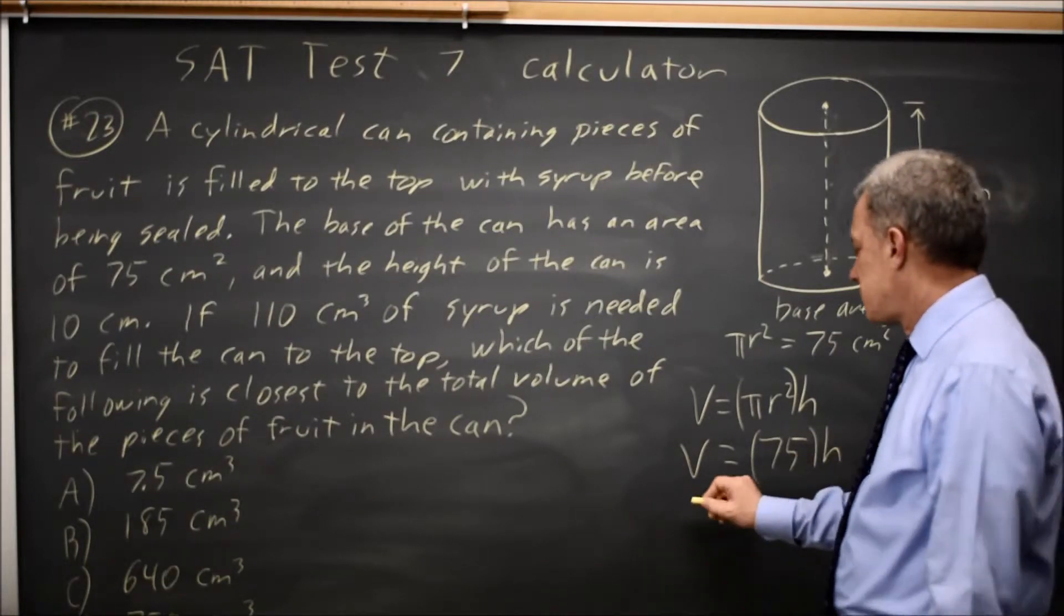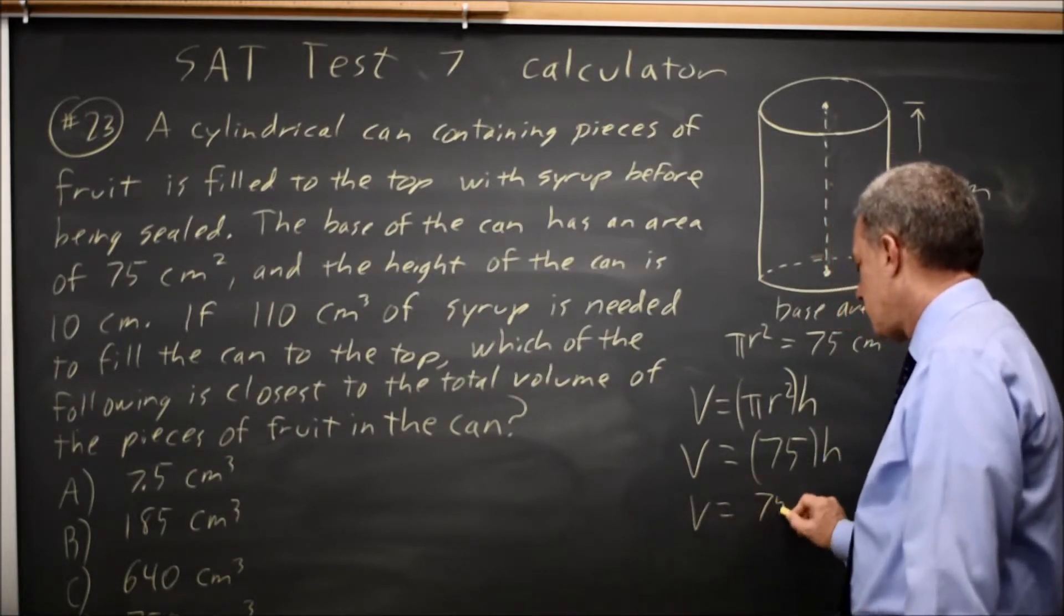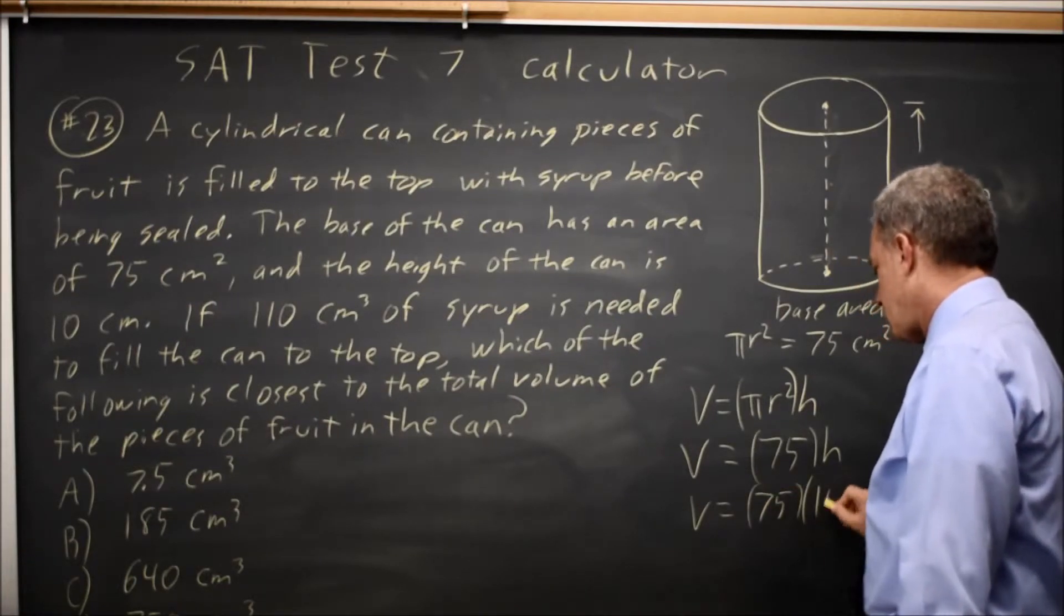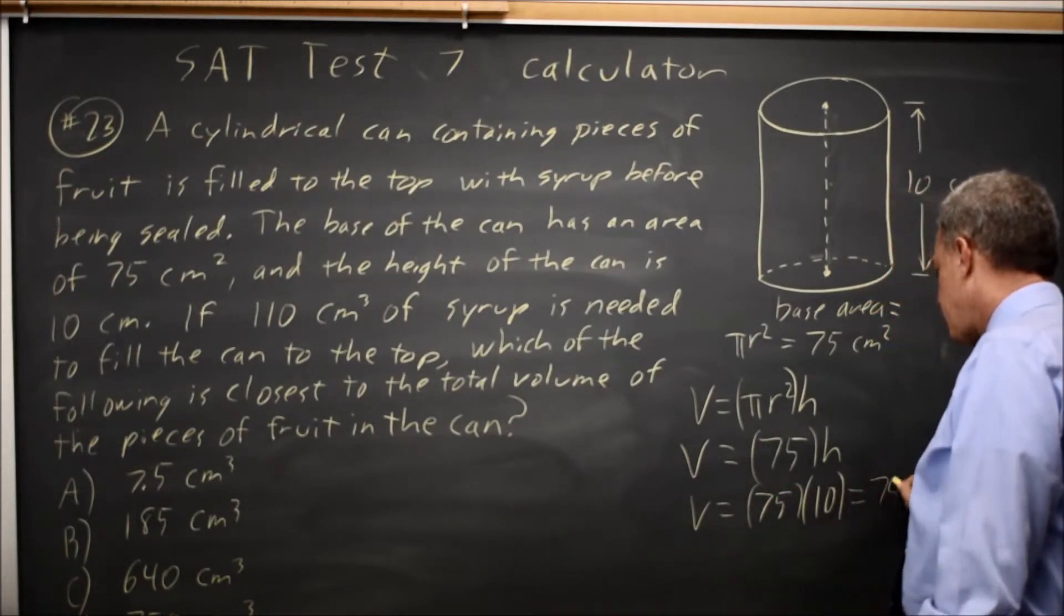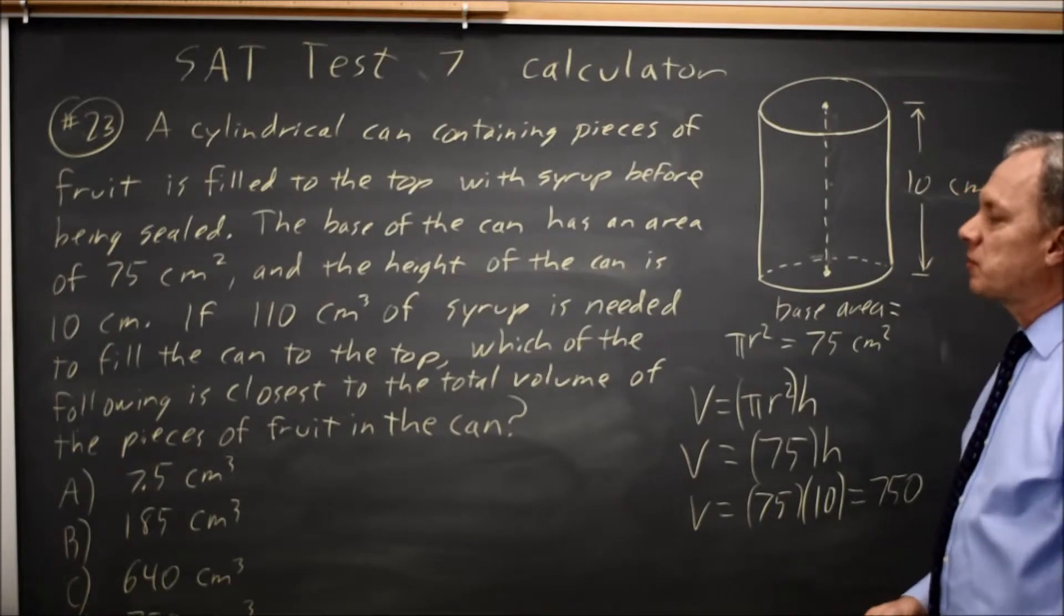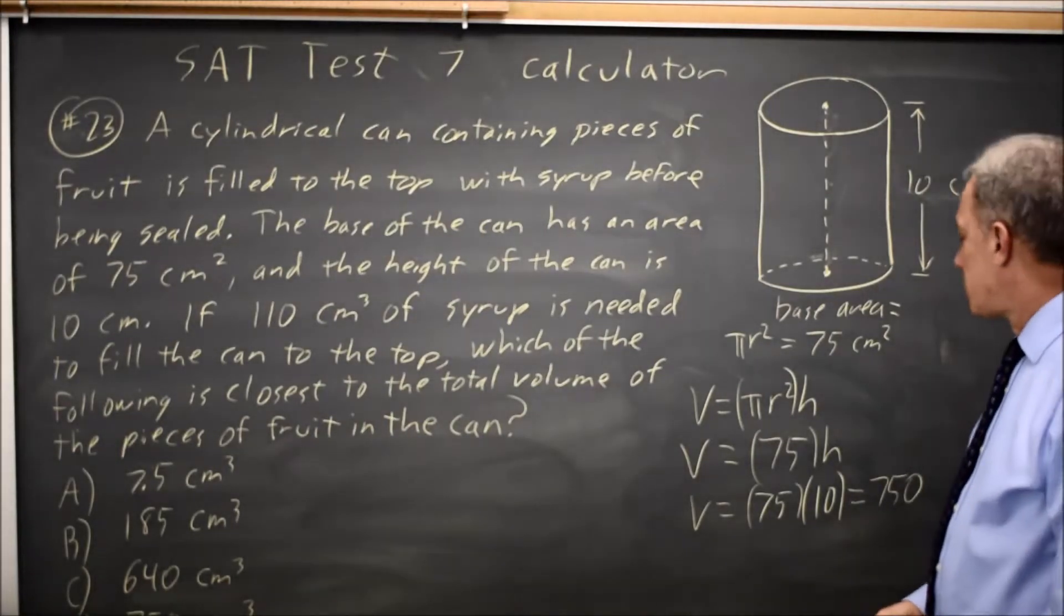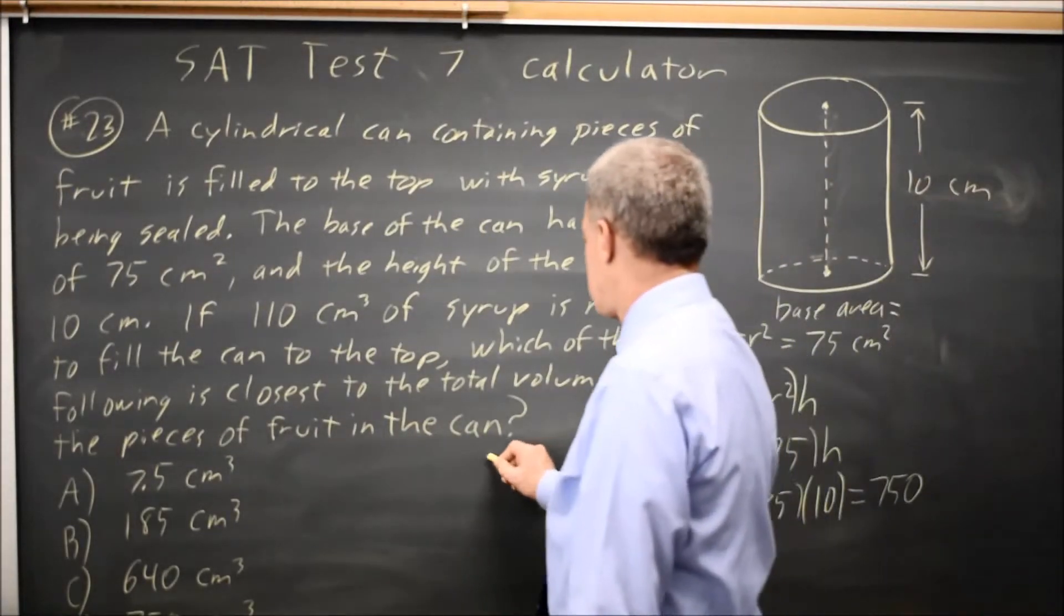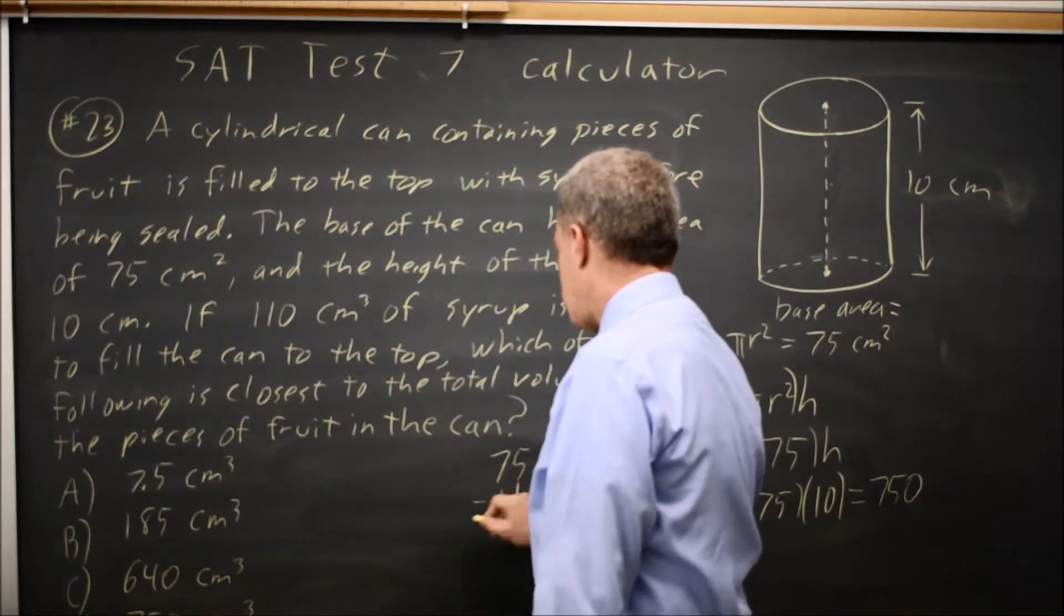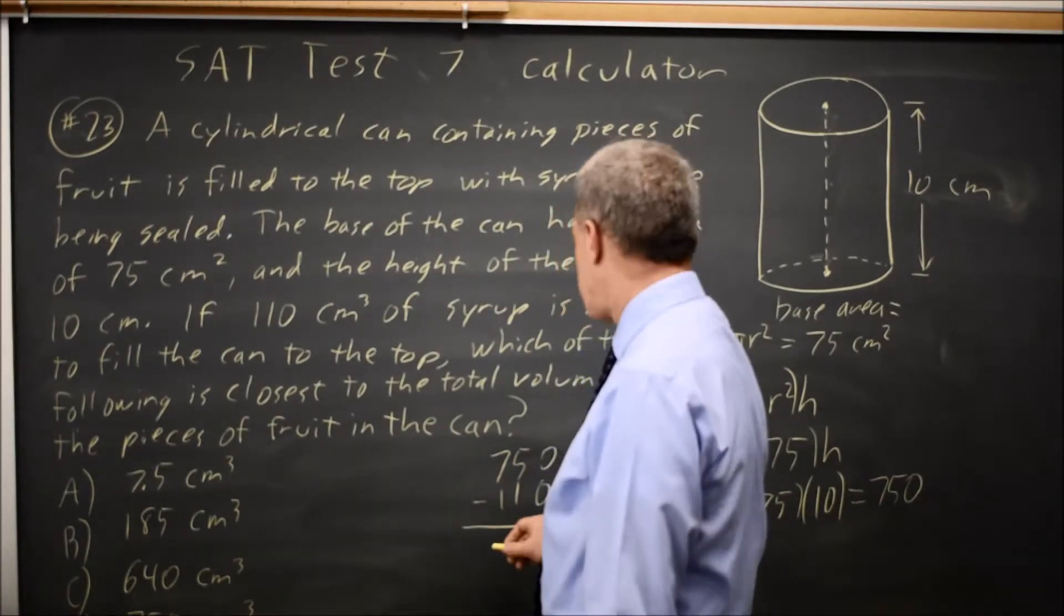Since we're given that h is 10, the volume of the can is 750. The volume of the syrup is 110, and the rest of the can is fruit.